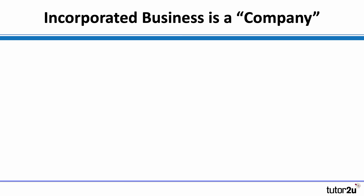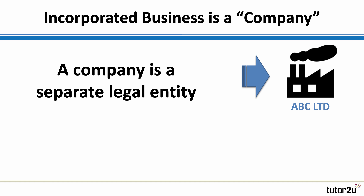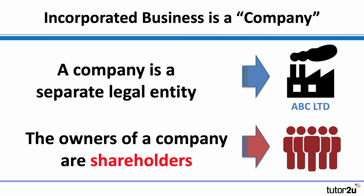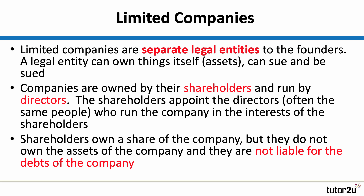Let's spend a minute looking at incorporated businesses. The key here is that with incorporated businesses, the business has a separate legal identity — the company is the business. Of course the company has owners; the owners of a company are shareholders. But the shareholders are not the business; they simply own part of the business, which is the company. That has big implications if the business fails, because the owners — the shareholders — are not liable for the debts of the business. They have limited liability.